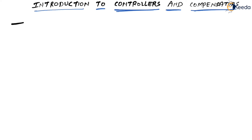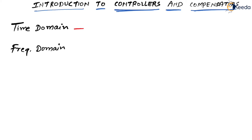Up until now, what have we done? We have done time domain analysis as well as frequency domain analysis. In our time domain analysis, we have talked about percentage MP, which was a time domain parameter. Then there was Tp, then Tr, then Td, then Ts, and we also had ESS and E of T.